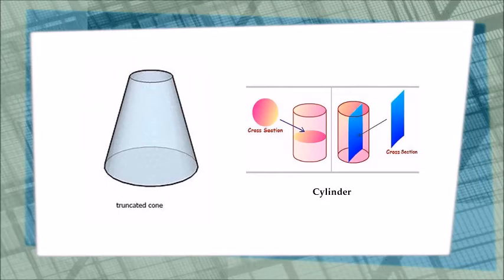Now let us consider option B. A cylinder has a circle as its horizontal cross section and a rectangle as its vertical cross section. It has cross sections matching to those mentioned in our question.